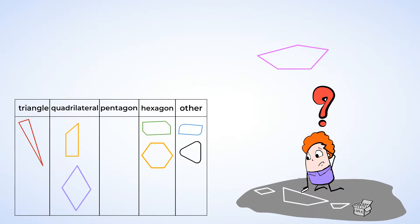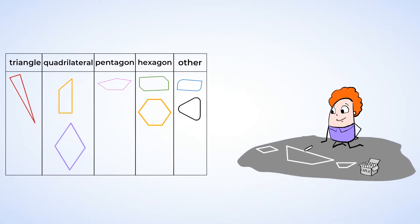And lastly, the pink shape has 5 sides and 5 angles. And that would make it a pentagon. Great job! You've sorted all these 2D shapes by checking out how many sides and how many angles each one has.